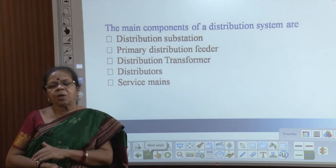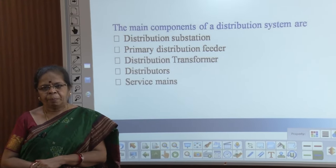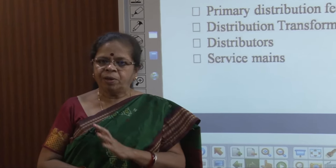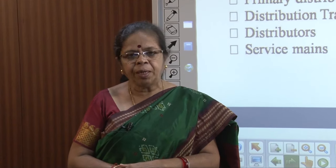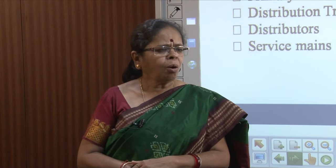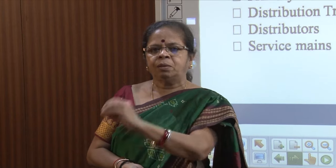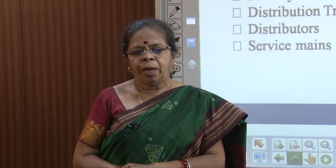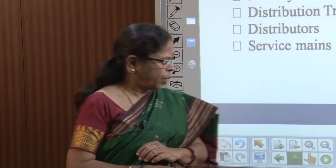Now let us see what are the main components of a distribution system. You have a distribution substation where the voltage is stepped down to the level required by the consumer, then a primary distribution feeder, and then distribution transformers. These step down voltage at the consumer level — the distribution transformer gives you the voltage required by your equipment. Then we have distributors and service mains.